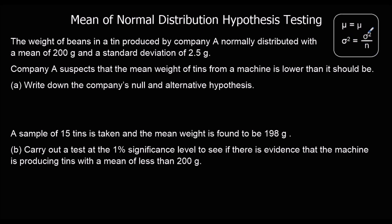So the variance of a sample is the population variance divided by how many bits of data are in that sample. If you square root both sides, you can also say the standard deviation for the sample is the standard deviation over root n.